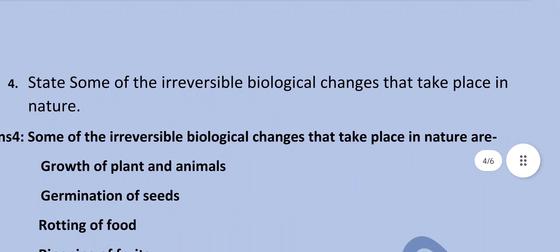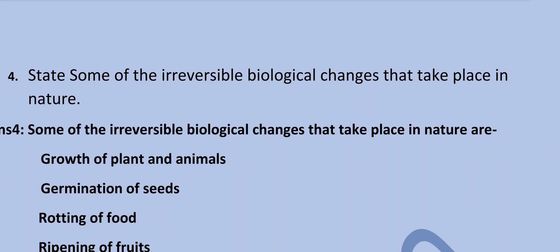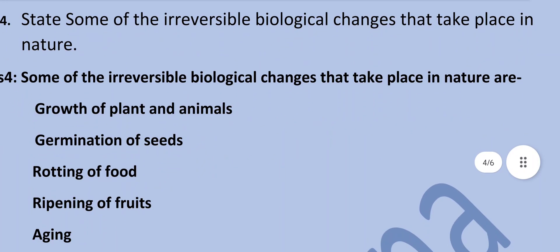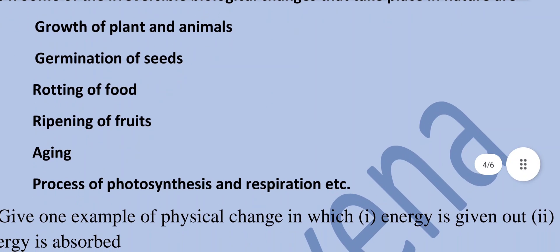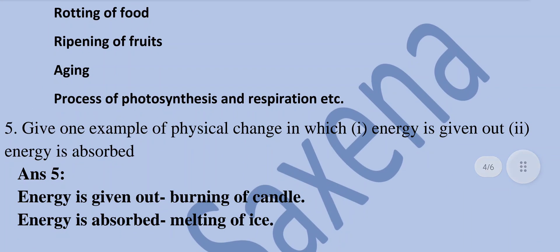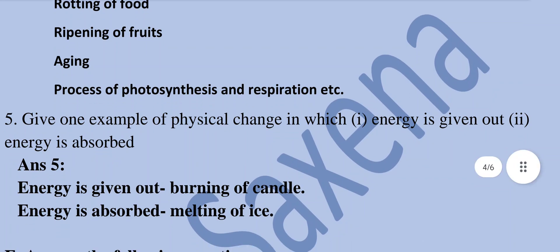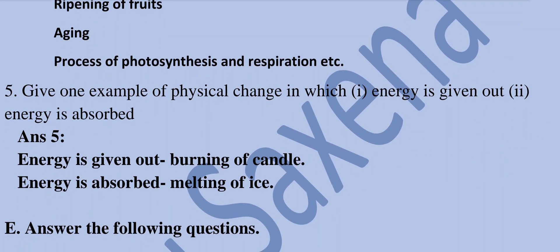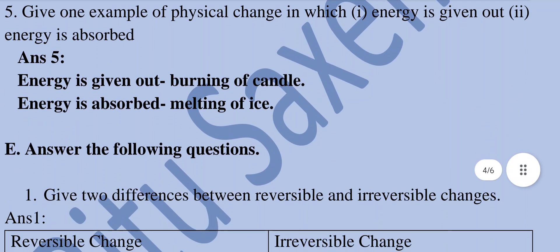State some of the irreversible biological changes that take place in nature. Some irreversible biological changes are growth of plants and animals, germination of seeds, rotting of food, ripening of fruits, aging, and the processes of photosynthesis and respiration. Give one example of a physical change in which energy is given out — burning of a candle — and one where energy is absorbed — melting of ice.